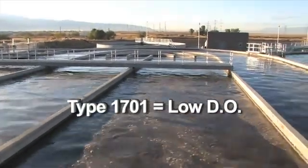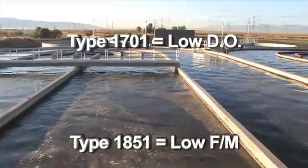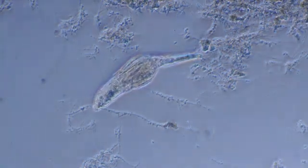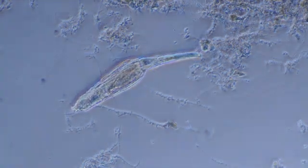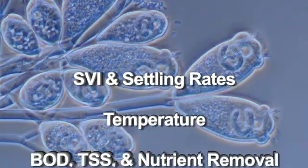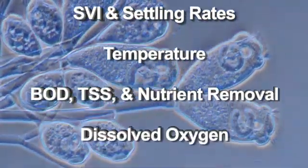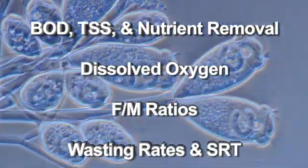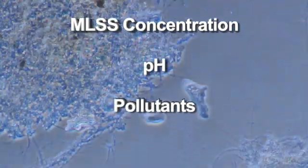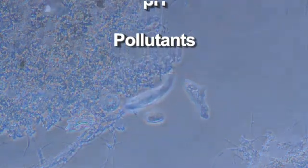Physical parameters that could correlate with your microorganism populations include: SVI and settling rates, temperature, BOD, TSS and nutrient removal rates, dissolved oxygen levels, F to M ratios, wasting rates and SRT, mixed liquor concentration, pH, and the presence of pollutants.